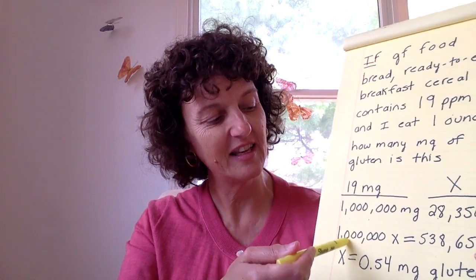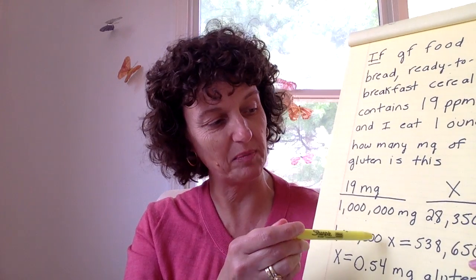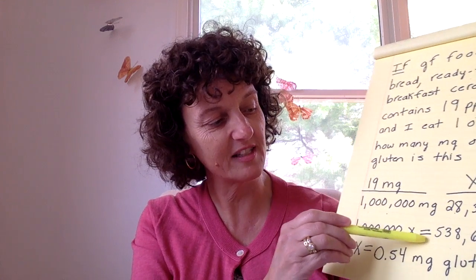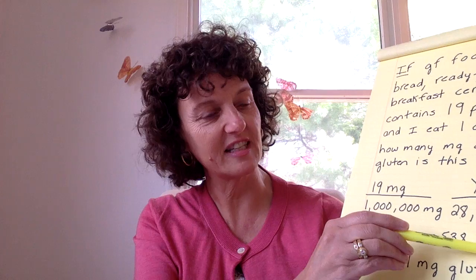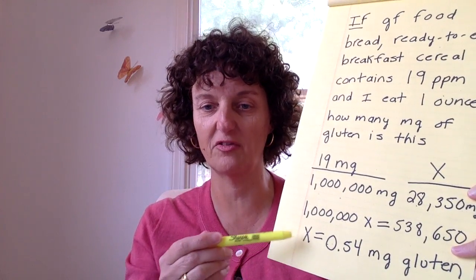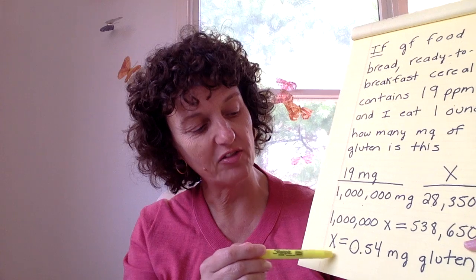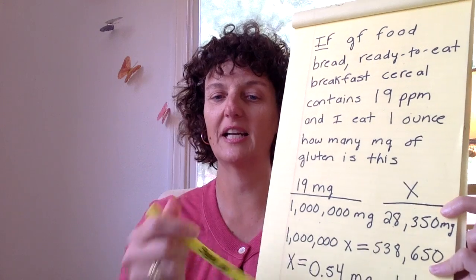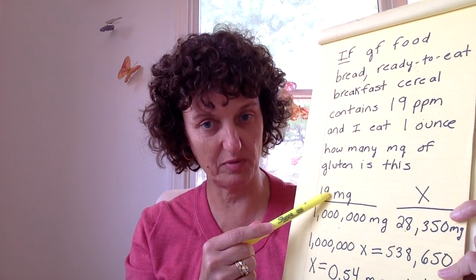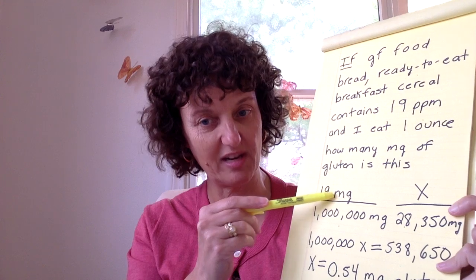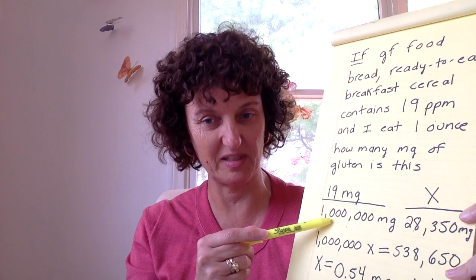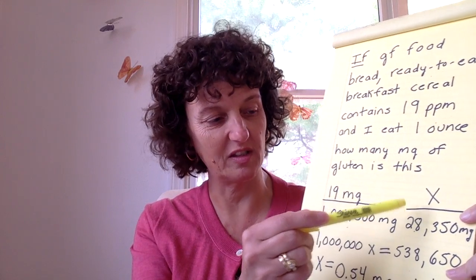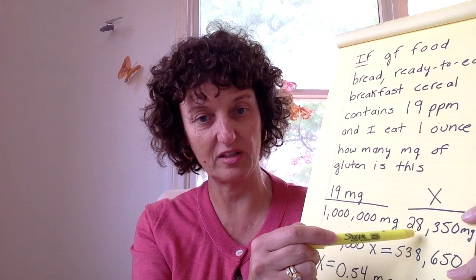So doing the math, I have a proportion where 1,000,000 × X equals 19 × 28,350, which is 538,650 milligrams. Solving for X, X equals 0.54 milligrams of gluten. So if a product contains 19 parts per million — which is the same as 19 milligrams in 1 million milligrams — I can figure out how many milligrams of gluten I am getting in one ounce of product.